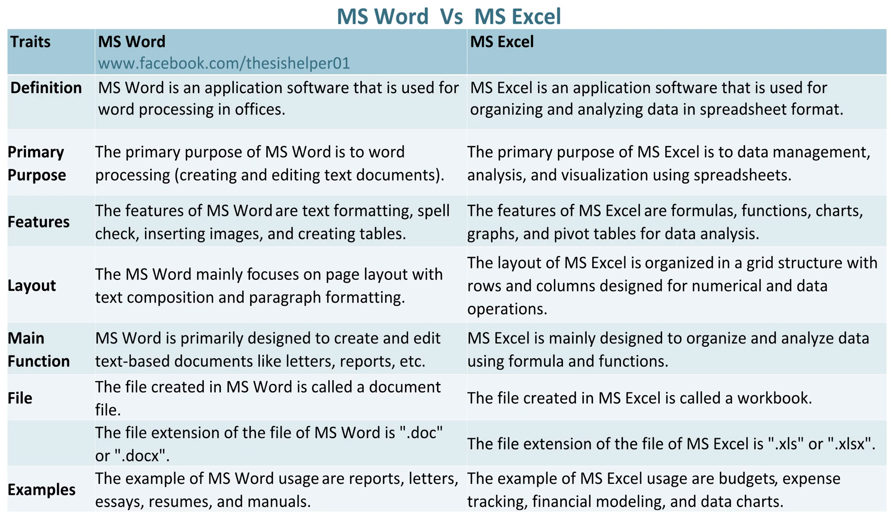The features of MS Word are text formatting, spell check, inserting images, and creating tables. Whereas, the features of MS Excel are formulas, functions, charts, graphs, and pivot tables for data analysis.